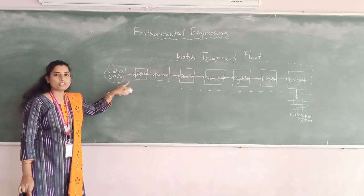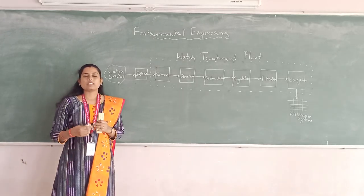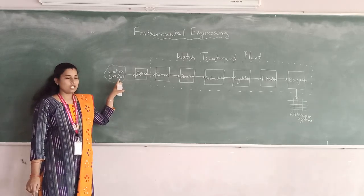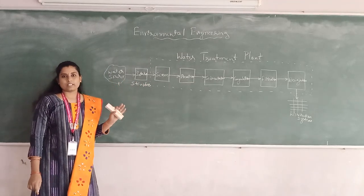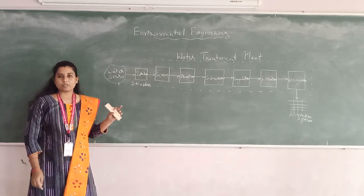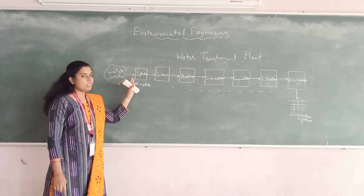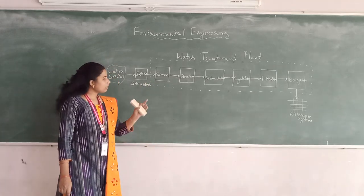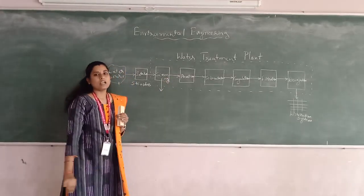From the water source, the water will be drawn by using the intake structure. That water source could be a river, canal, or any water body in which there is sufficient quantity of water even during the dry season. We select such a water source. We have different types of intake structures, such as river intake structure, canal intake structure, lake intake structure, and sub-nose intake structure. By using these intake structures, we draw water from any water body and send it to the water treatment plant.